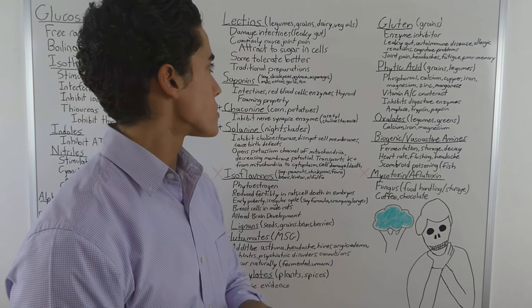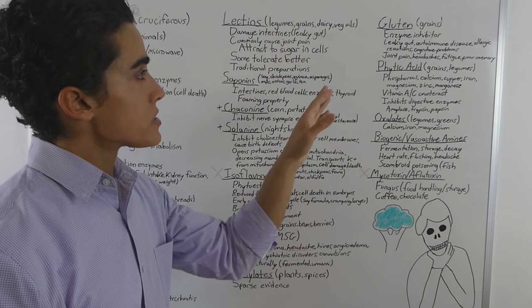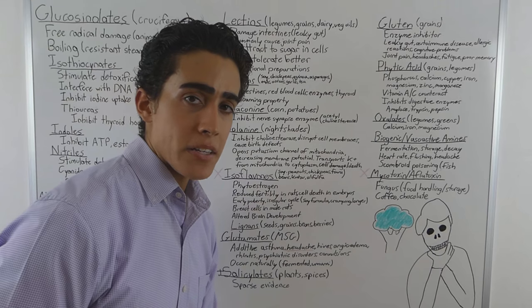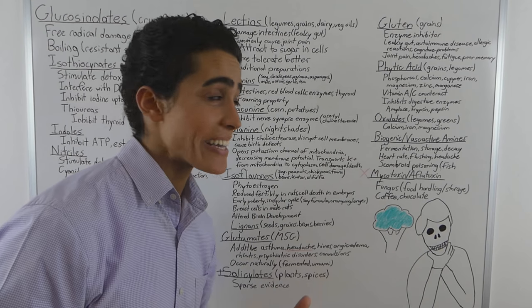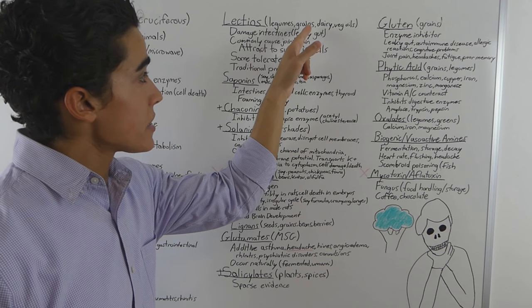Lectins are a much bigger antinutrient that causes a lot of problems for people. And lectins, saponins, and gluten are the main antinutrients associated with leaky gut and a lot of gut problems. Lectins in particular are contained in legumes, grains,